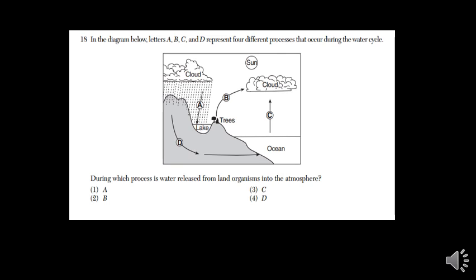The diagram shows A, B, C, and D representing four different processes that occur in the water cycle. We want to know which process releases water from land organisms into the atmosphere.